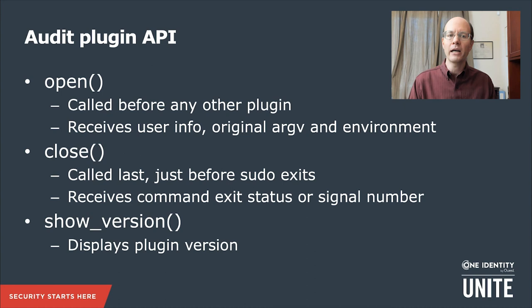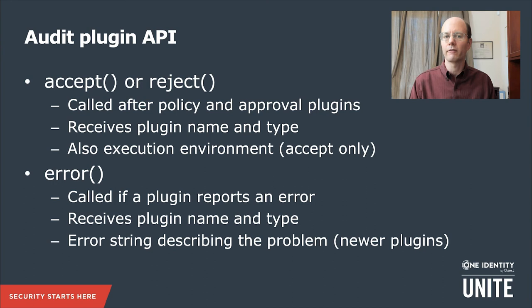So the API is pretty simple. There's an open function that gets called before any of the other plugins, and that gets the user info as well as the original argument vector that Sudo was run with and the user's initial environment. There's a close function that gets called last just before Sudo exits, and that gets the command's exit status or signal number if it was killed by a signal. There's also a show version function that just displays the plugin version, and all the plugins have this. The real interesting things are the accept, reject, and error functions. These are called after the policy and approval plugins are called. The accept and reject receive the plugin name and type, and in the case of the accept function, it also gets the execution environment that the command was run with.